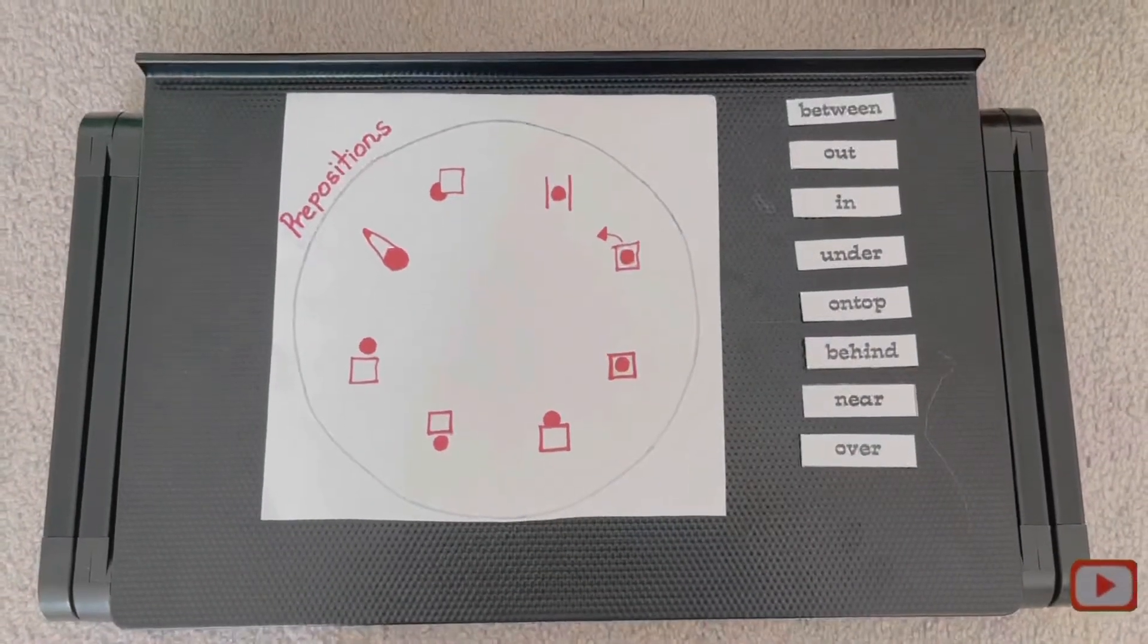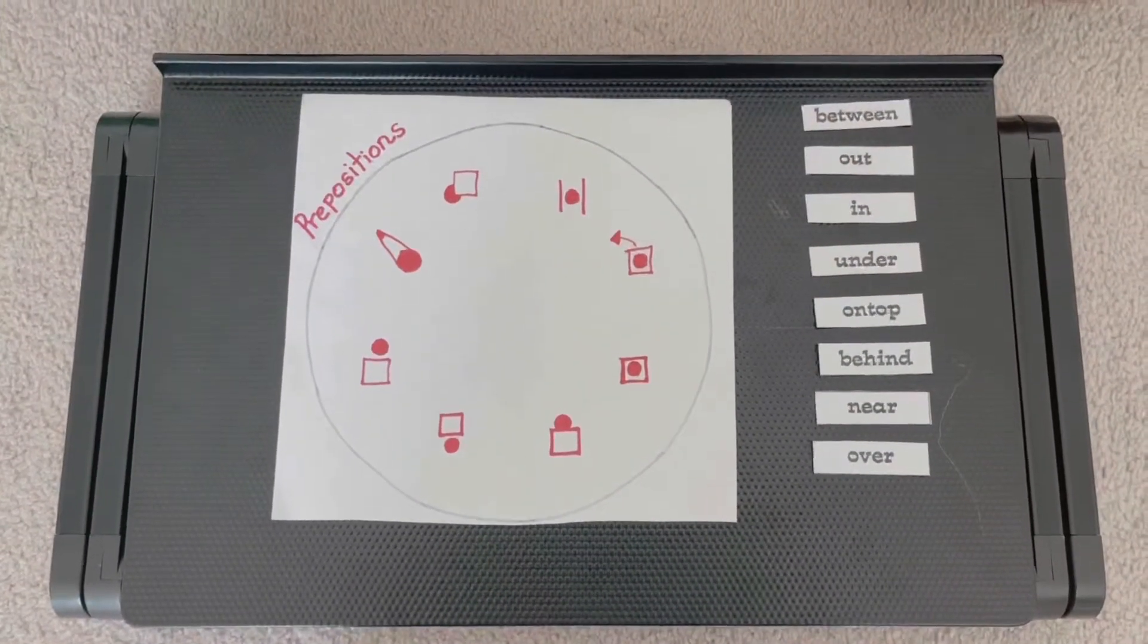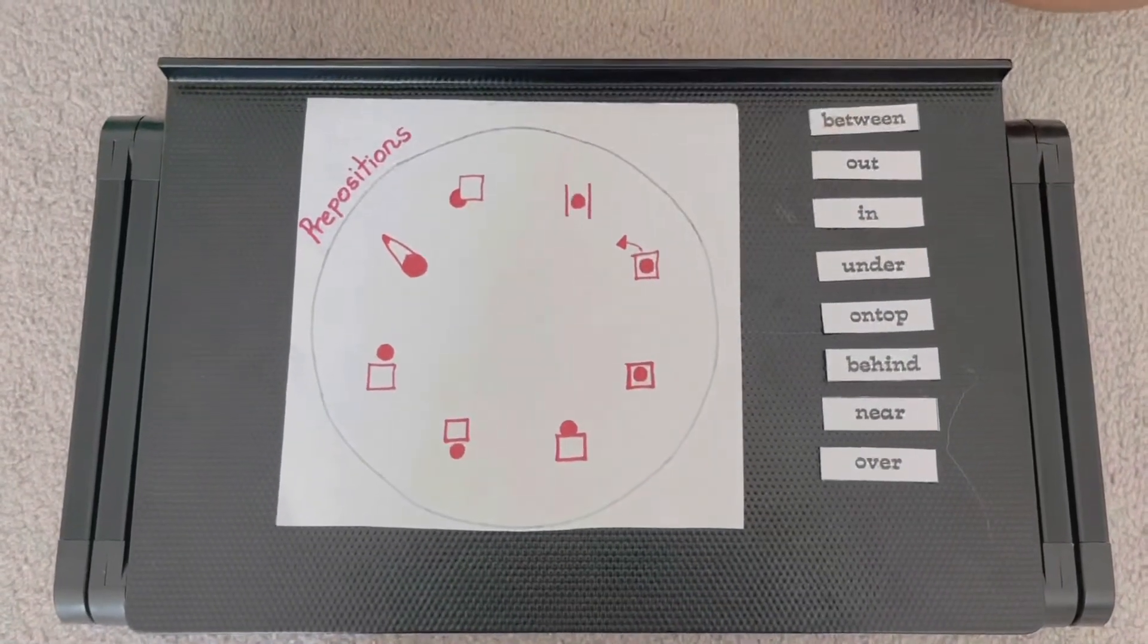So the first step in making this is you draw a big circle and then you draw little circles around it in different positions.